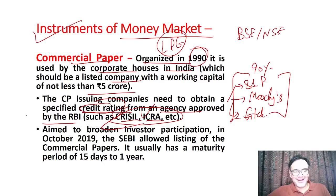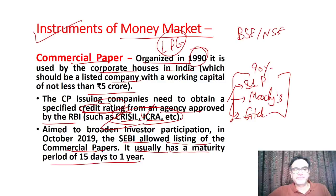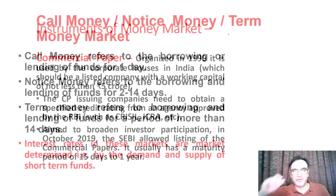In October 2019, aimed to broaden investor participation, SEBI allowed the listing of commercial papers on BSE and NSE for further trading. Commercial papers usually have a maturity period of 15 days to one year — as a money market instrument, they must be less than or equal to one year. This listing means more money can be generated by these institutions.